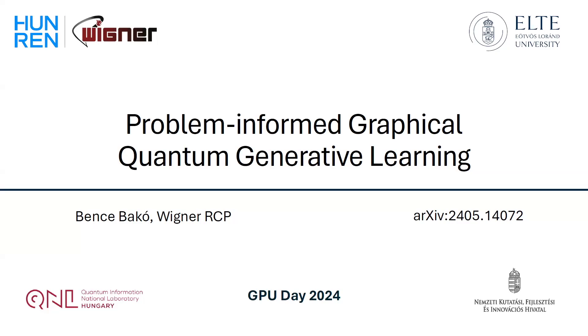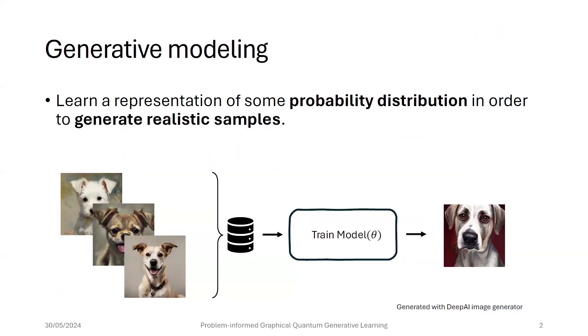Okay, thank you for the introduction, and I'm happy to share that we actually do some quantum machine learning research here at Wigner. The title is Problem Informed Graphical Quantum Generative Learning, which is a mouthful, but I will try to break it down.